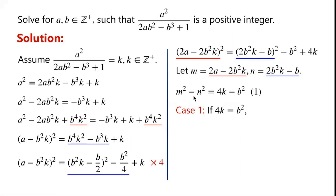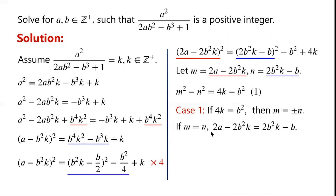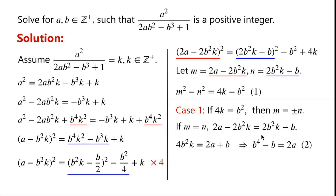which means b squared equals b squared, so m equals plus or minus n. If m equals n, then 2a minus 2b squared k equals 2b squared k minus b. By rearranging, we get 4b squared k equals b to the power of 4. So b to the power of 4 minus b equals 2a. Since k equals b squared over 4, which must be a positive integer, b must be even.